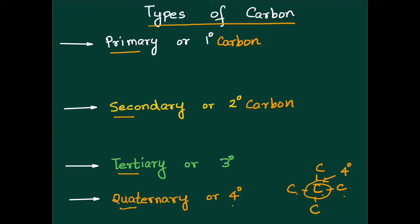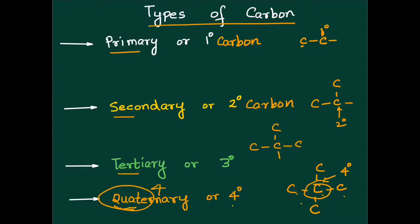So we have primary carbon — a carbon which is attached to only one other carbon, making it 1 degree. A carbon which is attached to 2 other carbon atoms is 2 degree carbon. A carbon which is attached to 3 other carbon atoms is 3 degree or tertiary carbon atom. And of course quaternary — quarter comes from the word 4.